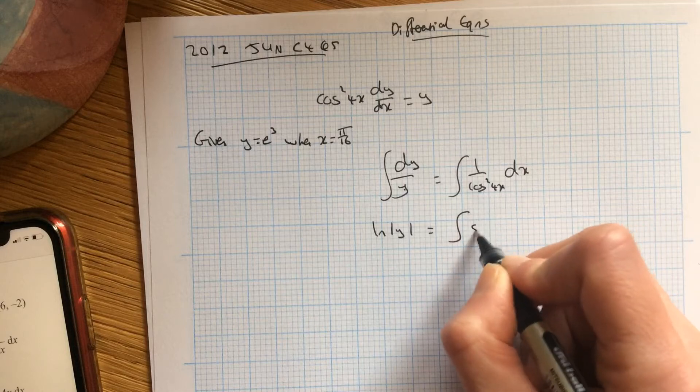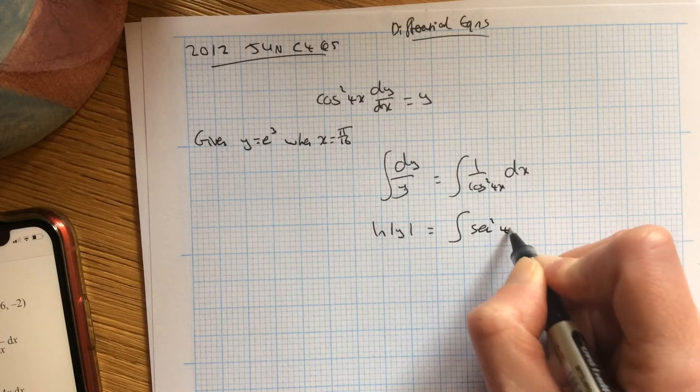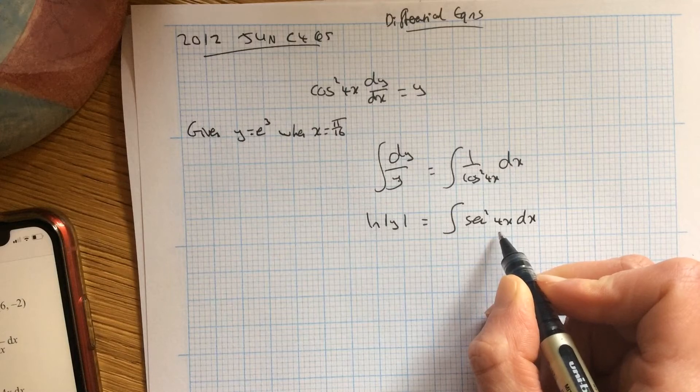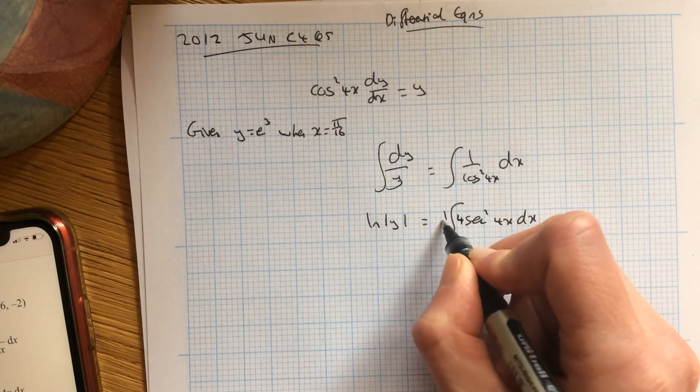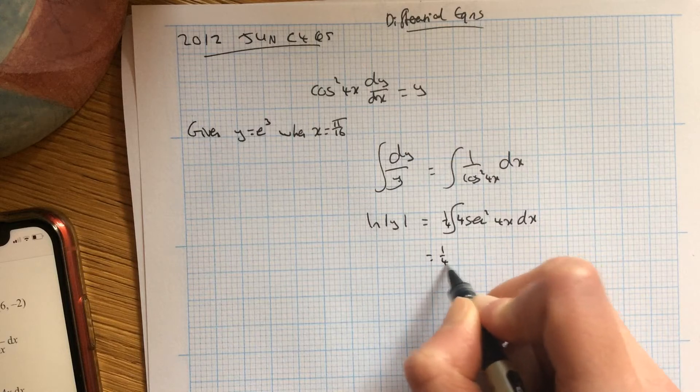The derivative is not on the top, but 1 over cos squared is the same as sec squared x. And remember, tan goes to sec squared. You must have the derivative in front, so balance it outside. Now it can go back to tan.